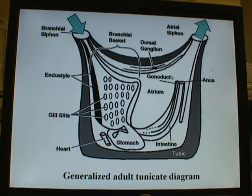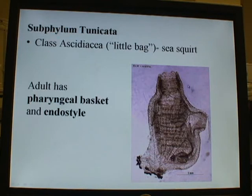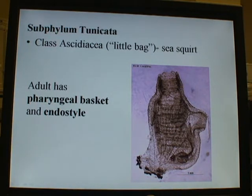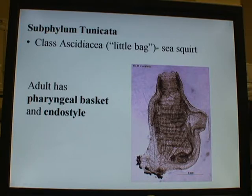So to summarize: this is the adult tunicate, a solitary species, in a generalized diagram. Water and food come in, food particles get stuck in the pharyngeal basket, the endostyle secretes mucus, cilia push it along from left to right in this diagram. The mucus with the food converges and moves downward, gets processed, and waste exits out the anus.